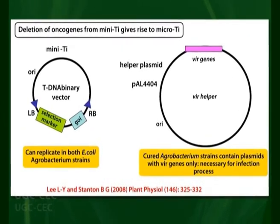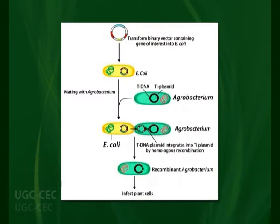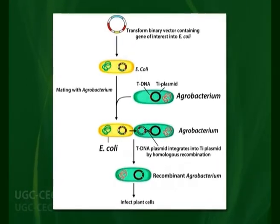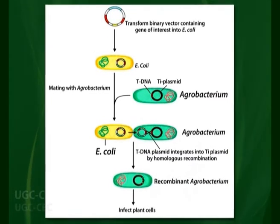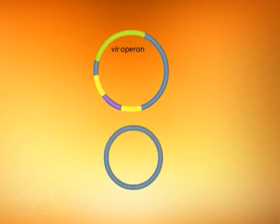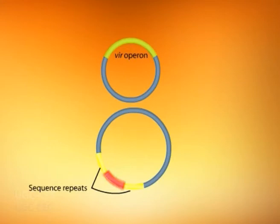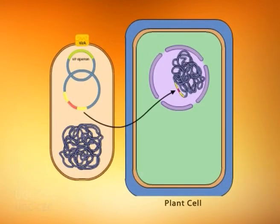The DNA insert is integrated within the T region of mini-Ti and the recombinant mini-Ti is cloned in E. coli. Transfer of recombinant mini-Ti from E. coli into Agrobacterium is achieved either by a three-way cross or by direct transformation of an Agrobacterium strain containing the helper Ti plasmid. The helper Ti plasmid has a functional VIR region but lacks the T-DNA region including the border sequences — for example plasmid pAL4404. The VIR genes present in helper plasmid pAL4404 aid the transfer of T-DNA containing the DNA insert of mini-Ti bin 19 into plant cells. The transformed plant cells can be selected on a selection medium with an appropriate antibiotic. The binary system avoids transfer of unnecessary sequences into plant genomes, which occurs with co-integrate vectors.